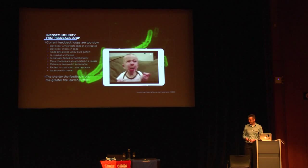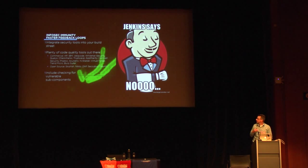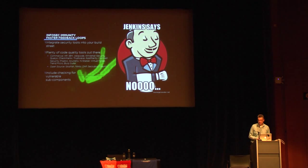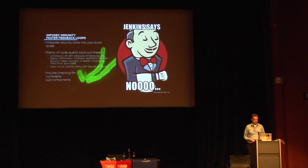In infosec — in application security, in any build system — we need quicker feedback loops. Red teaming is nice but a typical red team exercise takes days, weeks, even months. We want something that tells us what we did wrong in this commit today. There are plenty of tools out there — look at the open source tools as well. Another big part of where you want to increase feedback loop speed is sub-components: the code that you didn't build.